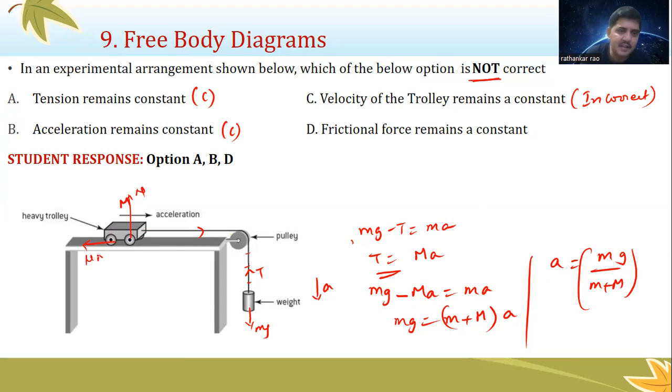Then frictional force remains constant. What is frictional force? When an object is moving, there's the normal force, and frictional force will be mu times n. N is nothing but mg, so mu times n also remains constant, which means frictional force given by mu times n is also constant. So this is also a correct one.